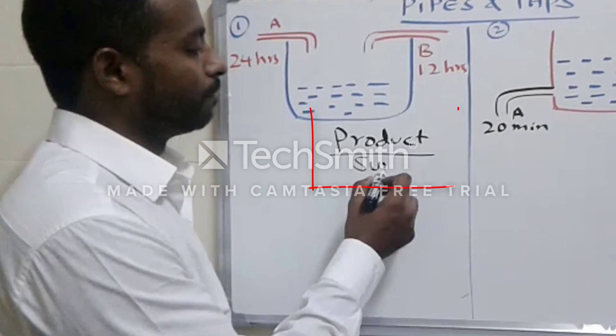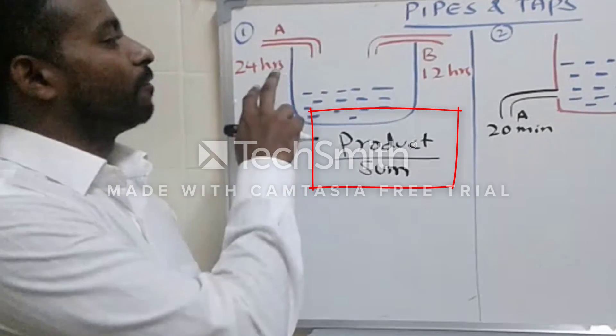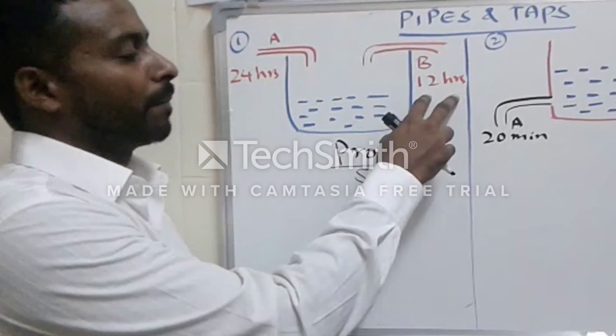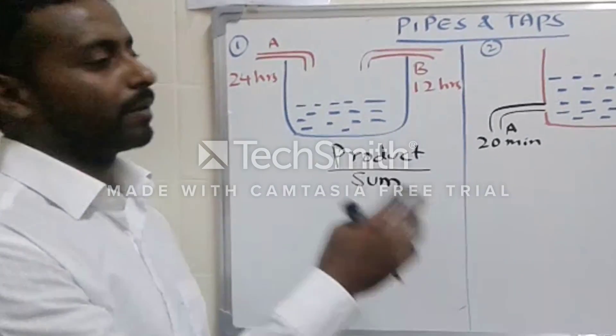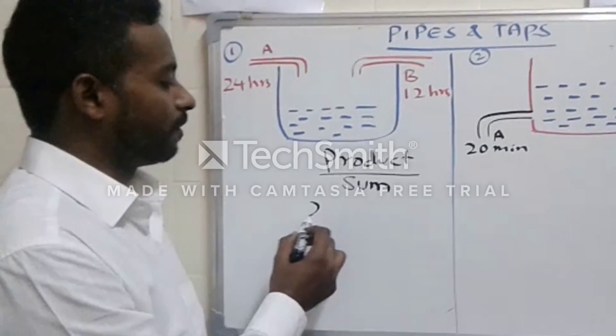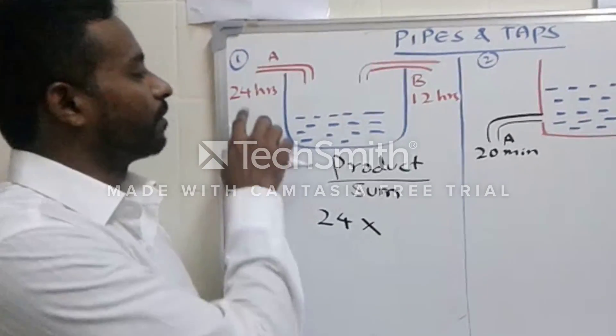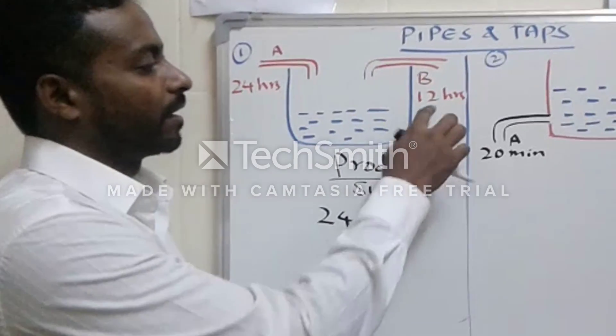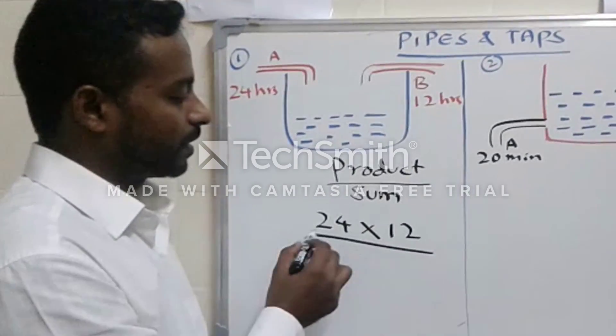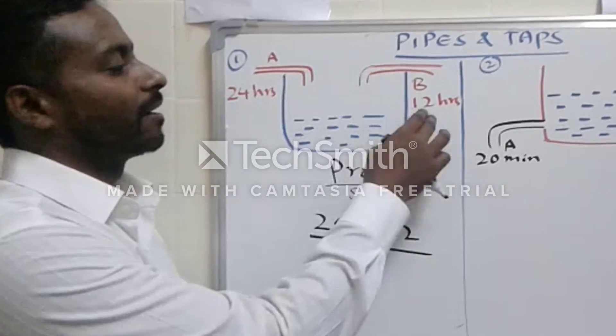For both pipes, whatever hours or minutes is given according to the question, just take down the values. Like here we have 24 and here 12. Multiply them, then divide by the sum, adding the two.